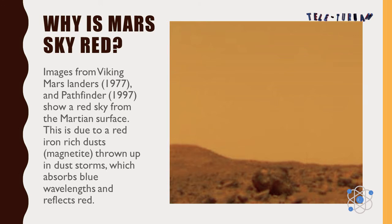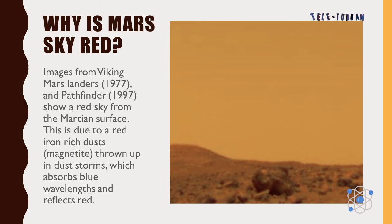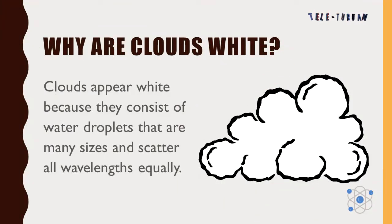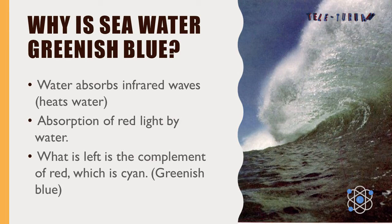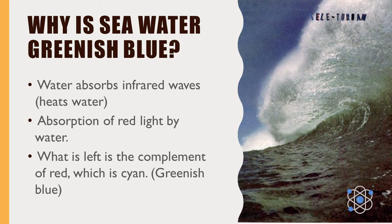Why is the Mars sky red? Images from Viking Mars landers in 1977 and Pathfinder in 1997 show a red sky from the Martian surface. This is due to red iron-rich dust and magnetite thrown up in dust storms, which absorbs blue wavelengths and reflects red. Clouds appear white because they consist of water droplets of many sizes that scatter all wavelengths equally. Seawater appears greenish blue because water absorbs infrared and red light; what remains is the complement of red, which is cyan or greenish blue.